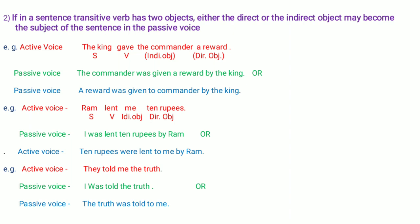Now, the indirect object. An indirect object answers the question 'to whom?' or 'for whom?' or 'for what?' — generally 'to whom?' For the same sentence: 'To whom did the king give a reward?' — the answer is 'to the commander.' That's why 'the commander' is the indirect object. You have to remember: direct object answers 'what?' and indirect object answers 'to whom?' or 'for whom?'